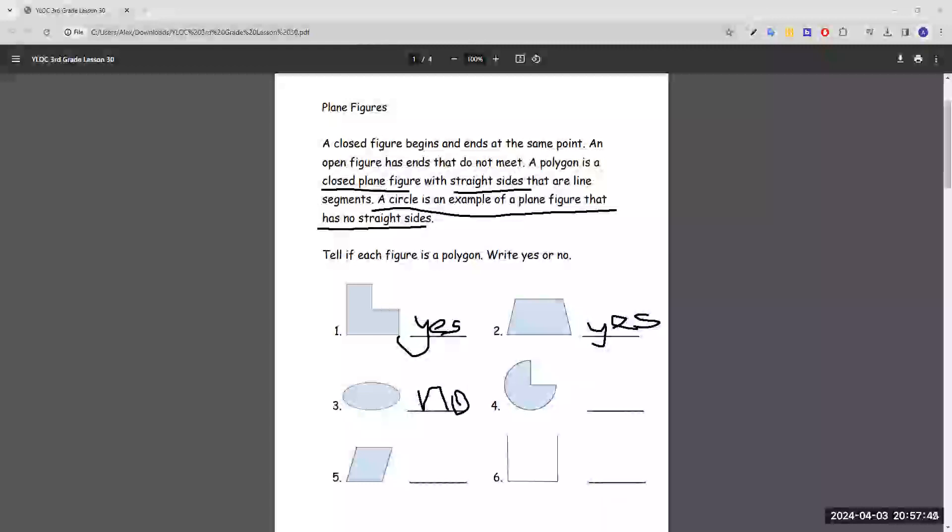Number four, although it has two straight sides, this part here is considered a circle, which means it would not be considered a polygon.